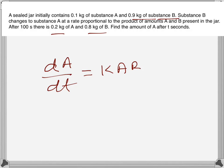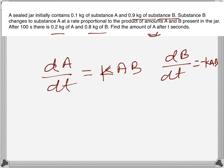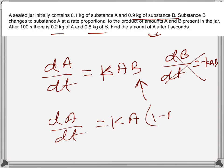We can write this as dA/dt = k·A·B. We could also write that the rate of increase of A equals the rate of decrease of B, but we want to find A, so we write in terms of A. Since B is also a variable, we substitute B in terms of A. The total mass A plus B equals one kilogram in both cases, so we can write B as 1 minus A.